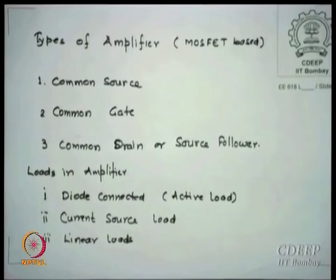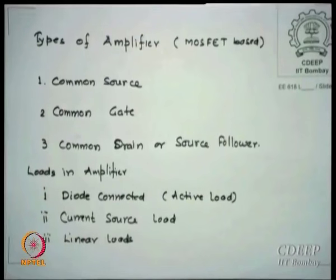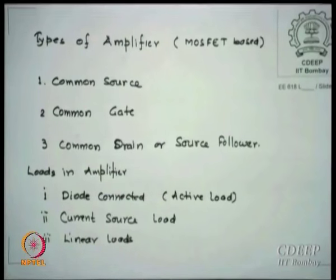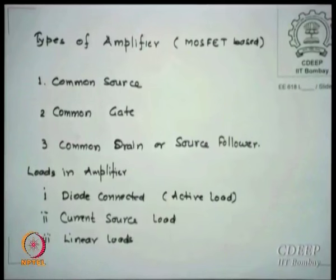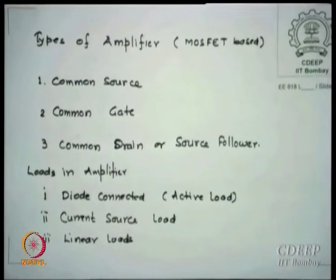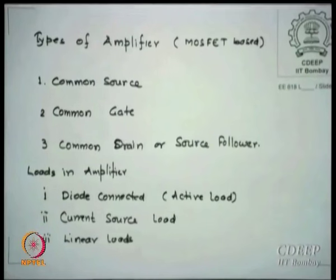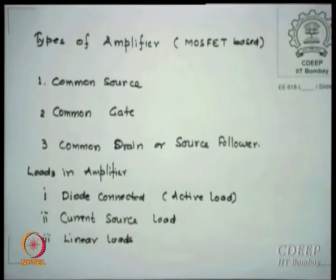Today we shall do the common source amplifier. We have already done it before, but I will use one interesting common source amplifier which gives a lot of understanding and has many features. There are three types of loads which we can use in amplifiers — apart from resistors, I am talking of non-resistive, active device loads. There are three kinds: diode connected, current source loads, and linear loads. We are essentially trying to replace resistors with transistors in different modes of operation. Each kind of load has some advantages and some disadvantages.